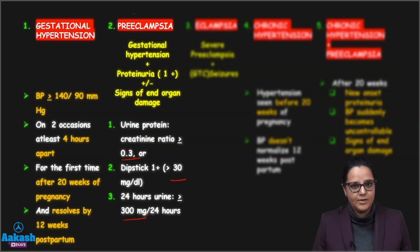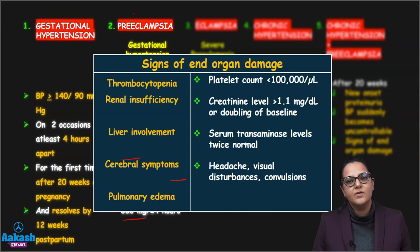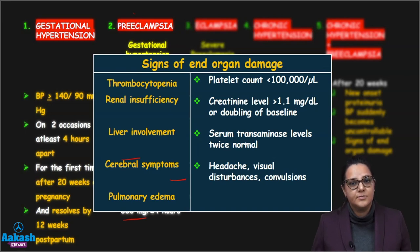So we need to remember only these three values: 0.3, 30, and 300. What are the signs of end organ damage? There are five signs: thrombocytopenia where the platelet count goes less than 1 lakh; renal insufficiency when the creatinine level is more than 1.1 or doubles the baseline; liver involvement where the serum transaminase levels are twice the normal; cerebral symptoms — the patient presents with headache, visual symptoms, blurring of vision, or pulmonary edema.